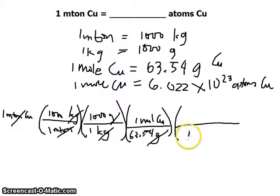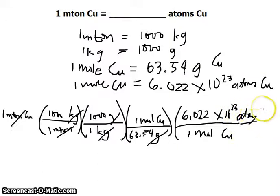And 1 mole of copper is equivalent to 6.022 times 10 to the 23rd atoms of copper. That's a huge number. Mole units would have to cancel out, so what would be left would